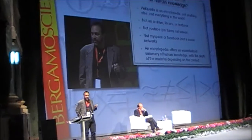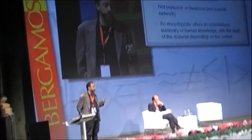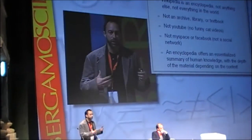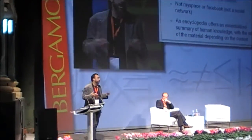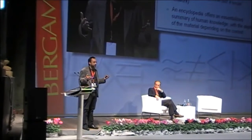The idea is that an encyclopedia presents an essentialized summary of human knowledge, with the depth of the material depending on the context. If I go into Wikipedia and look for some very general topic, like the Eiffel Tower in Paris, I should get an article that is easily accessible to anyone who can read — it tells you the basic facts, has a couple of pictures, and tells the history. And if you look up some very complex concept in mathematics, that entry is probably going to be a lot more in-depth, but hopefully we'll have links to other articles that help you understand things like partial differential equations. This is the main framework of ideas defining what is and isn't in Wikipedia.